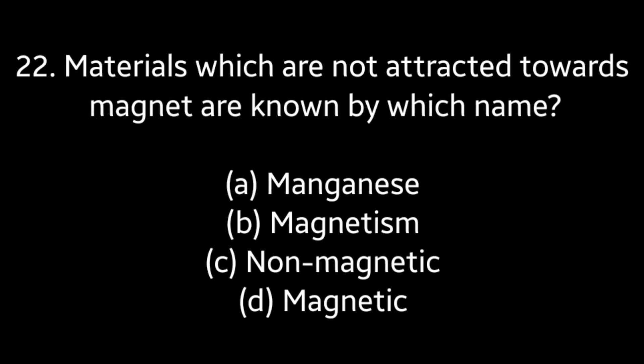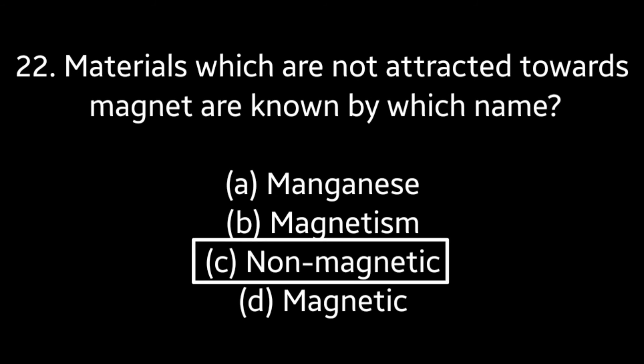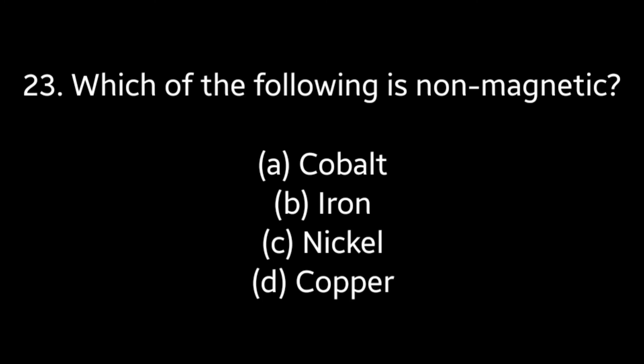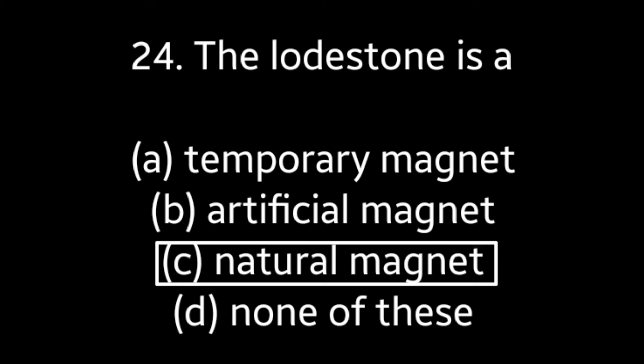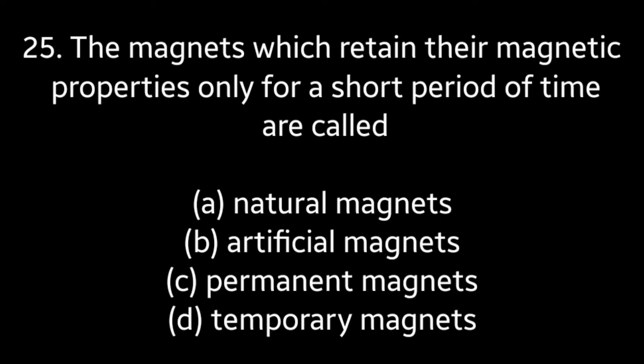Question number twenty-two: materials which are not attracted towards a magnet are known by which name — manganese, magnetism, non-magnetic, or magnetic? Answer is option C: non-magnetic. Question number twenty-three: which of the following is non-magnetic — cobalt, iron, nickel, or copper? Answer is option D: copper. Question number twenty-four: the lodestone is a — temporary magnet, artificial magnet, natural magnet, or none of these? Answer is option C: natural magnet.